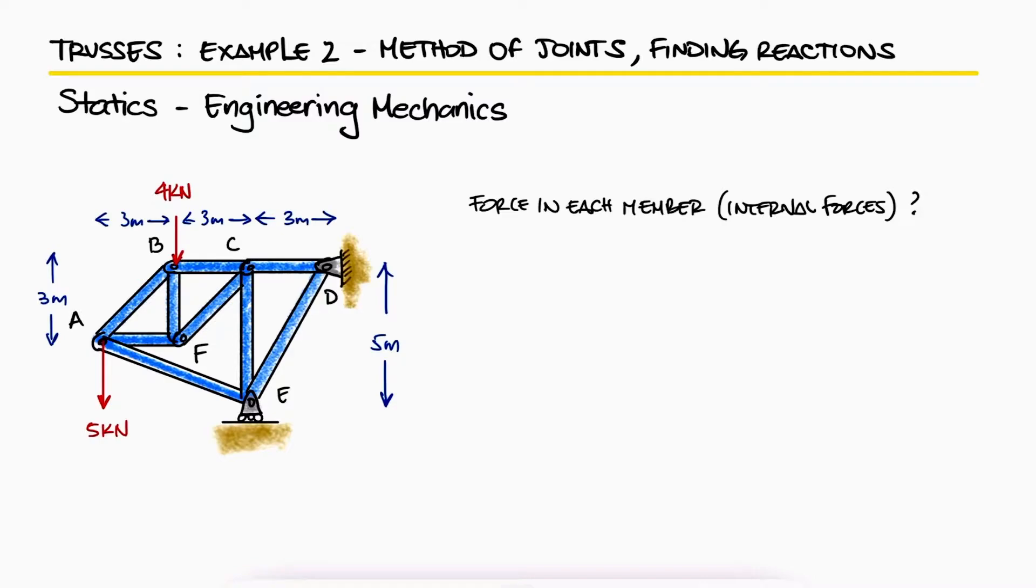As opposed to the first example, where we can use the method of joints at a joint where an external load is applied without having to find the reaction forces at the supports, in this problem, neither joint A or B and the two associated equilibrium equations, sum of forces in X and Y, would suffice to solve for the three variables in each case.